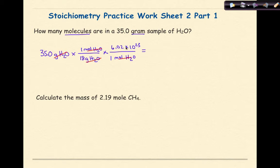I'm left with what I should have labeled as molecules right here. So, if I work this out, 35 times 1 times 6.02 times 10 to the 23rd and divide that by 18, I should get 1.17 times 10 to the 24th molecules of water, H2O.